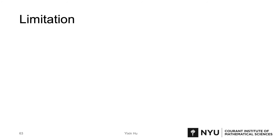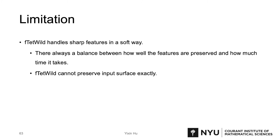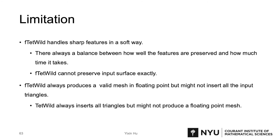With all these nice features shown before, fTetWild also has limitations. First, it handles sharp features in a softer way and cannot preserve the input surface exactly. Second, fTetWild always produces a valid mesh in floating points, but might not insert all input triangles. Differently, TetWild always inserts all triangles, but might not produce a floating-point mesh. But for both methods, we didn't find any failure case on the 10k dataset we tested.